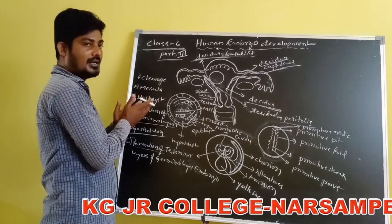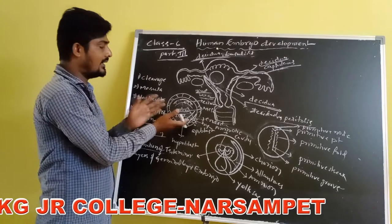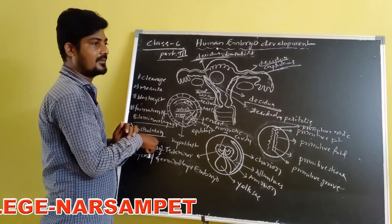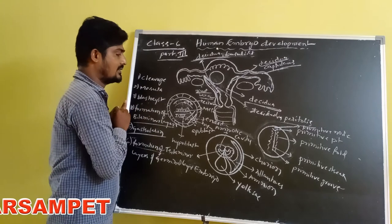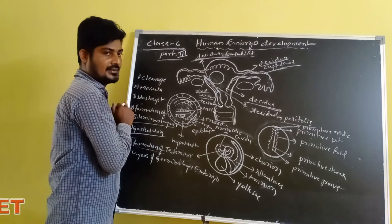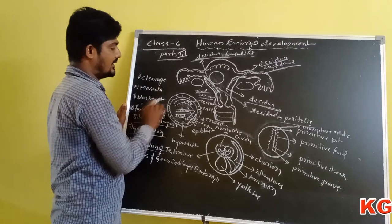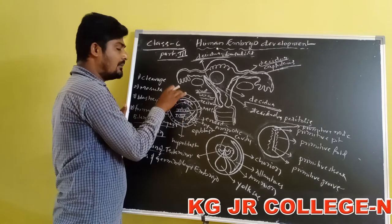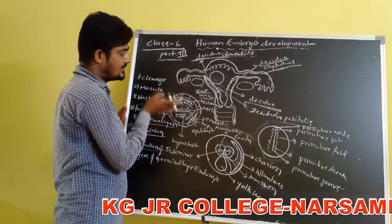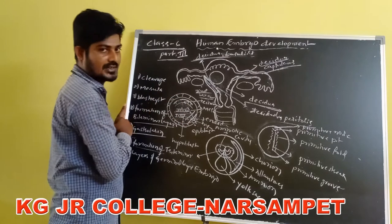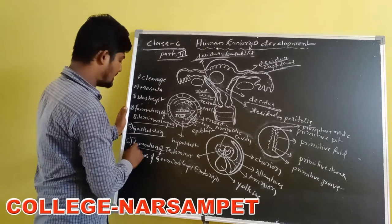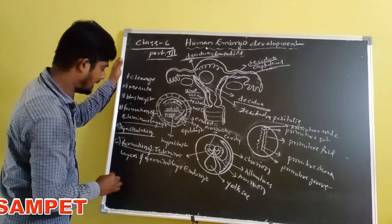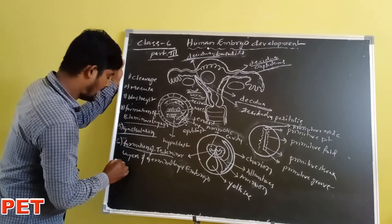During gastrulation, the bilaminar membrane is converted to the trilaminar membrane — that is called gastrulation. In this process, three layers are formed: ectoderm, endoderm, and mesoderm — formed between the epiblast and hypoblast. This is also called gastrulation.